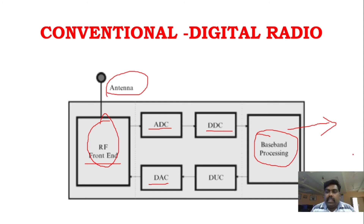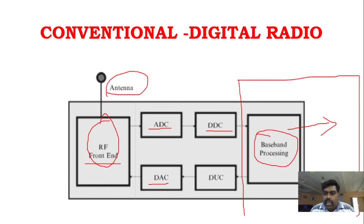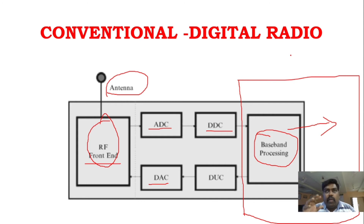So now — what is SDR? In the baseband processing, instead of using fixed hardware, I am changing that particular hardware into programmable hardware. What is programmable hardware? It is hardware whose function we can easily change, achieving a lot of things — for example, you can easily change the carrier operations.